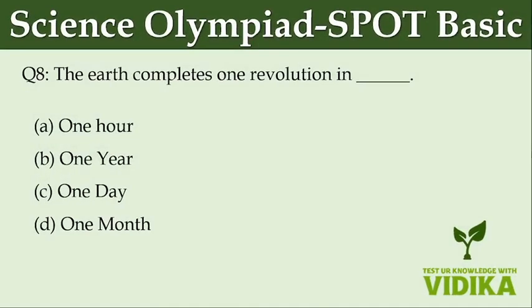The Earth completes one revolution in dash. Option A: one hour. Option B: one year. Option C: one day. Option D: one month.